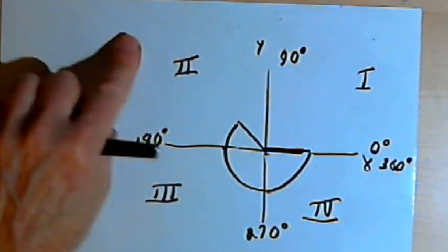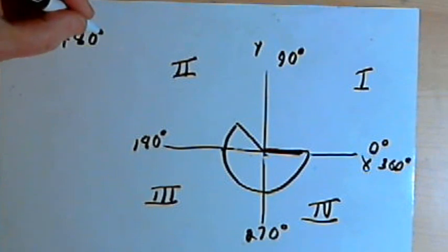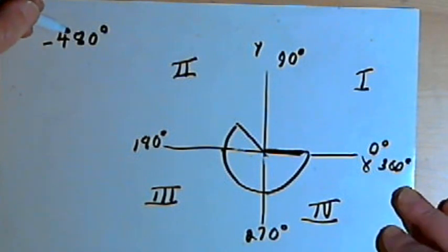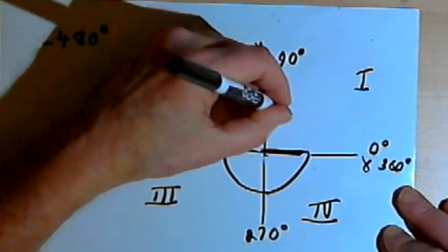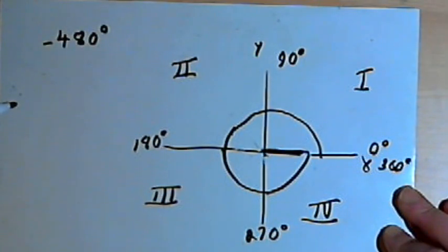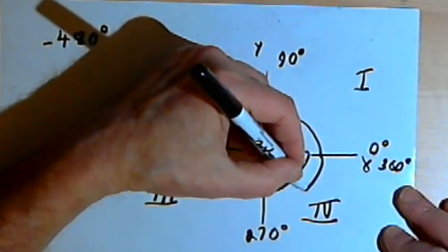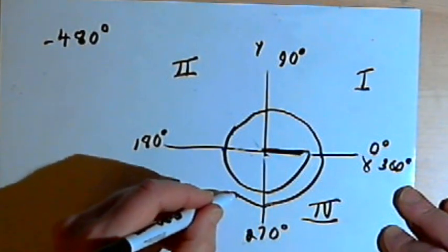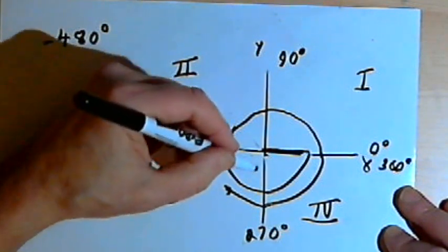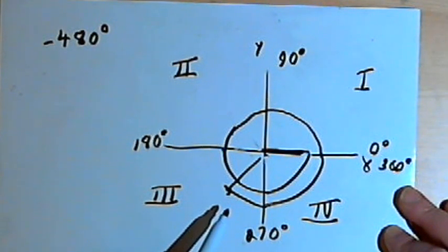Negative angles can also be greater than 360 degrees. Let's do negative 480 degrees — going clockwise a full time around the origin, that's 360 degrees. I still have 120 degrees to go, so I continue going clockwise. 90 degrees will take me through the fourth quadrant, and I need 30 degrees more, so I end up in the third quadrant. So this would be a sketch of negative 480 degrees.